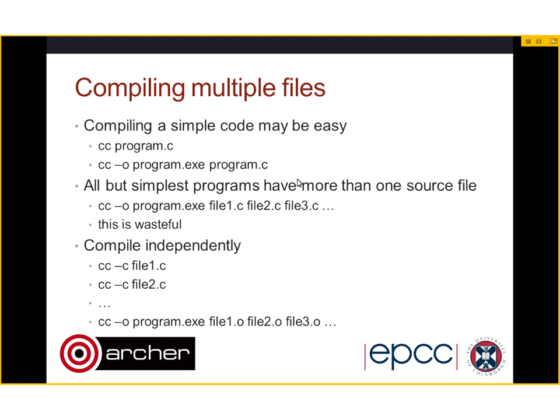But of course this is wasteful — you're recompiling every source file every time and you may only have changed one. What we tend to do is compile independently. Rather than producing the program file from all input files at once, you compile each independently. cc -c does that and produces a .o object file. For each .c file you have an object file, and at the end cc -o program.exe takes the .o files — the compiler is just linking them.